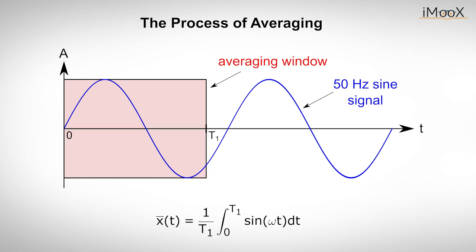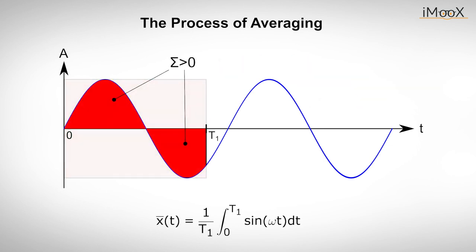Graphically, the integral is simply the sum of the areas of the positive half wave minus the sum of the areas of the negative half wave between the time instant 0 and T1.